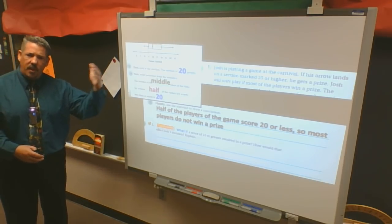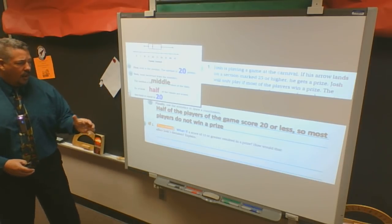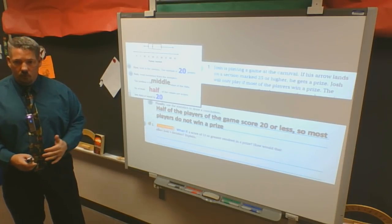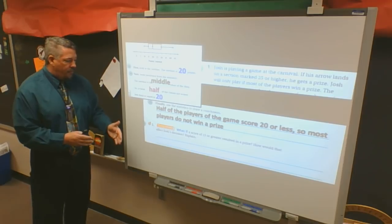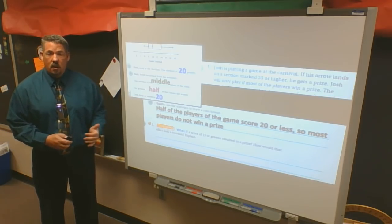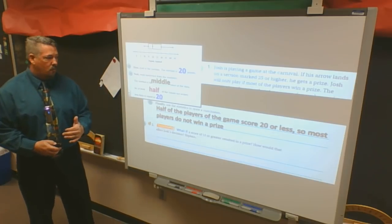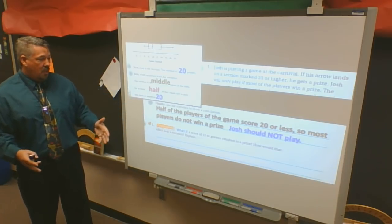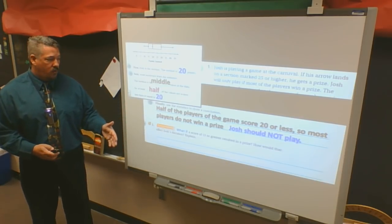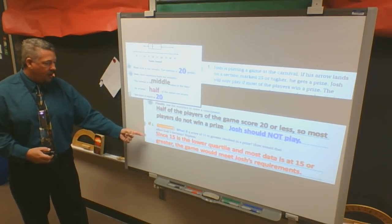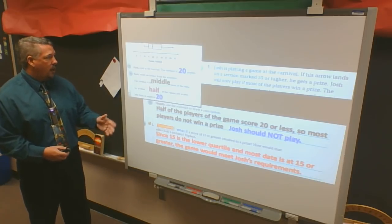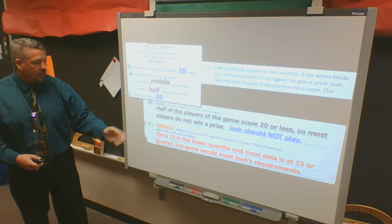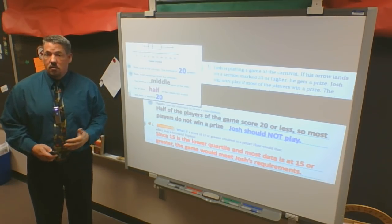But they say, what if? So think then, if we change the statistics, a score of 15 or greater, instead of 25 or greater, 15 or greater is what? Gets you a prize. How would that affect Josh's decision? And you will explain. Well, if I change it to 15 or more, and the majority of the people get 20 or higher, then that's going to meet Josh's requirements. So where Josh wouldn't play this game, down here, since 15 is the lower quartile, and I know everyone else, this larger grouping is going to get more than the game would meet Josh's requirements. So he should play. Make sure you fill in your book. Make sure you're following along.